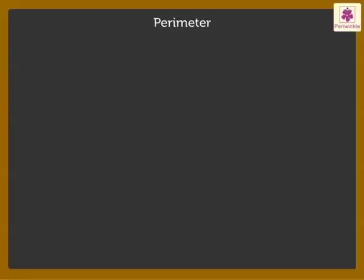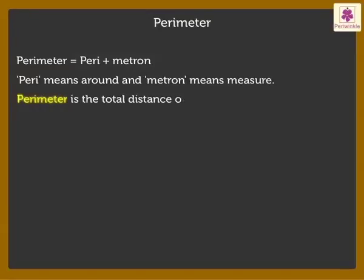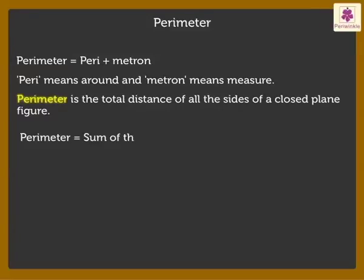The word perimeter comes from two Greek words: peri and metron. Peri means around and metron means measure. Thus, perimeter is the total distance of all the sides of a closed plane figure. Hence, it is found by adding the lengths of all the sides of a closed plane figure.